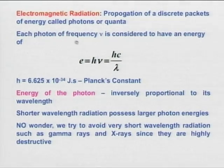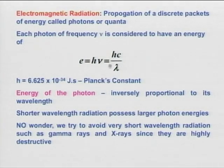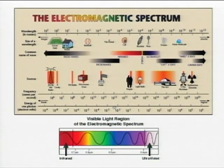Each photon with frequency ν has energy E = hν — that is what Planck gave us. Also E = hc/λ, where Planck's constant h = 6.625 × 10⁻³⁴ joule-seconds. Energy of a photon is inversely proportional to wavelength, which is why shorter wavelength waves like gamma rays and X-rays are highly destructive — they carry larger energy.